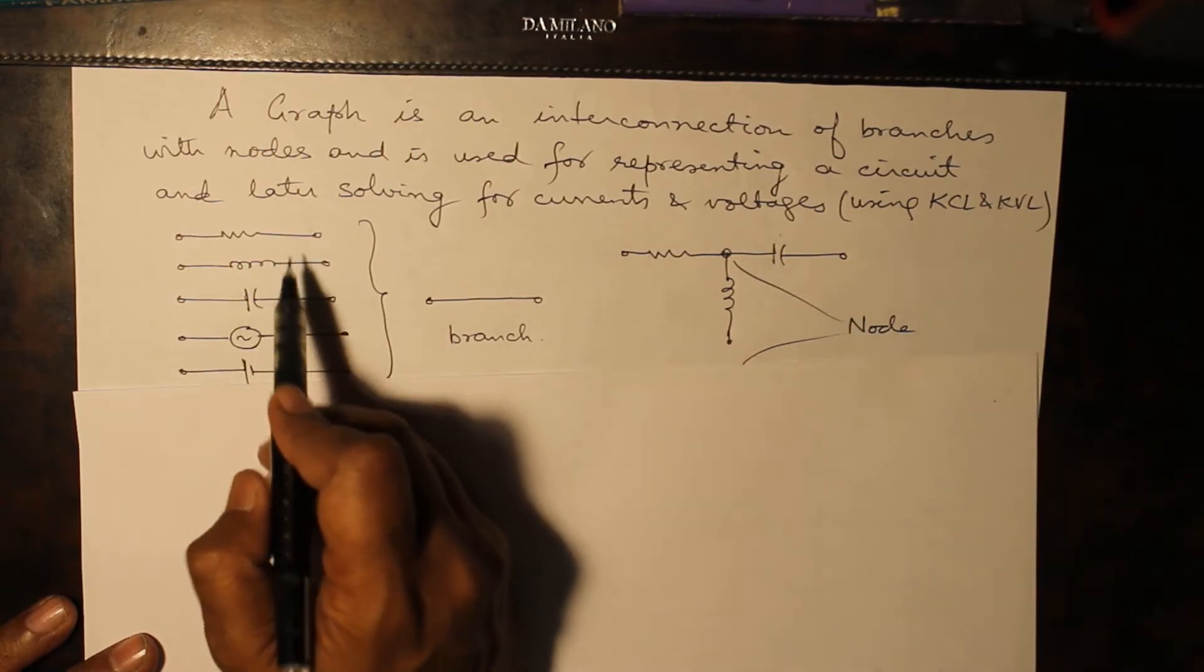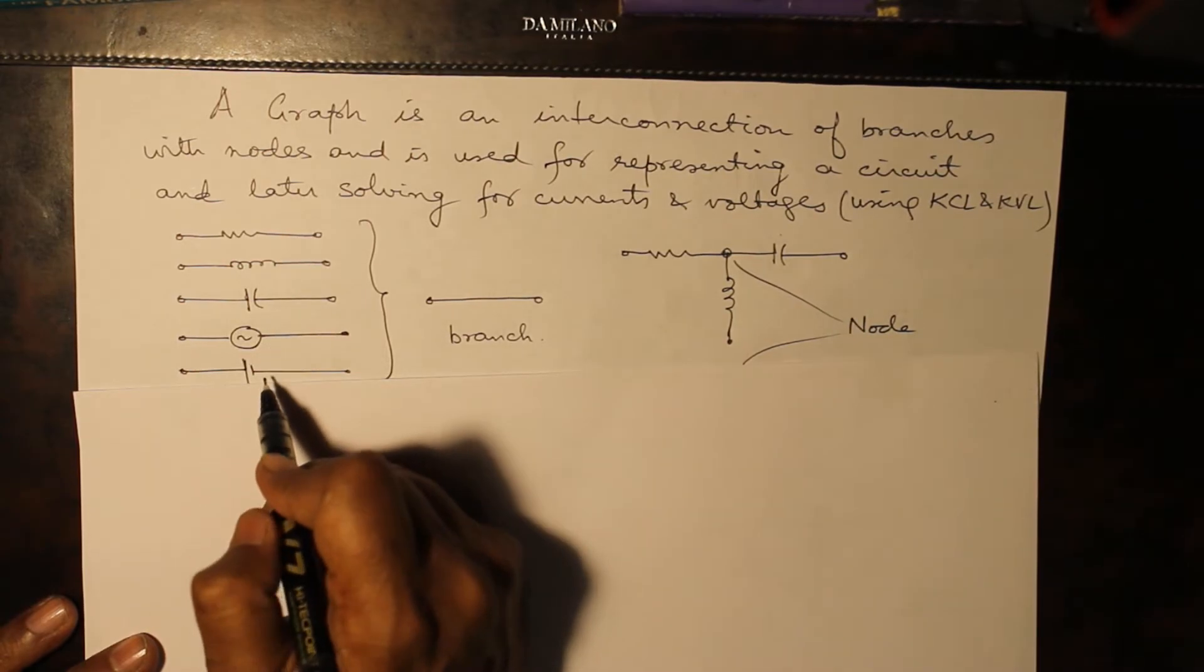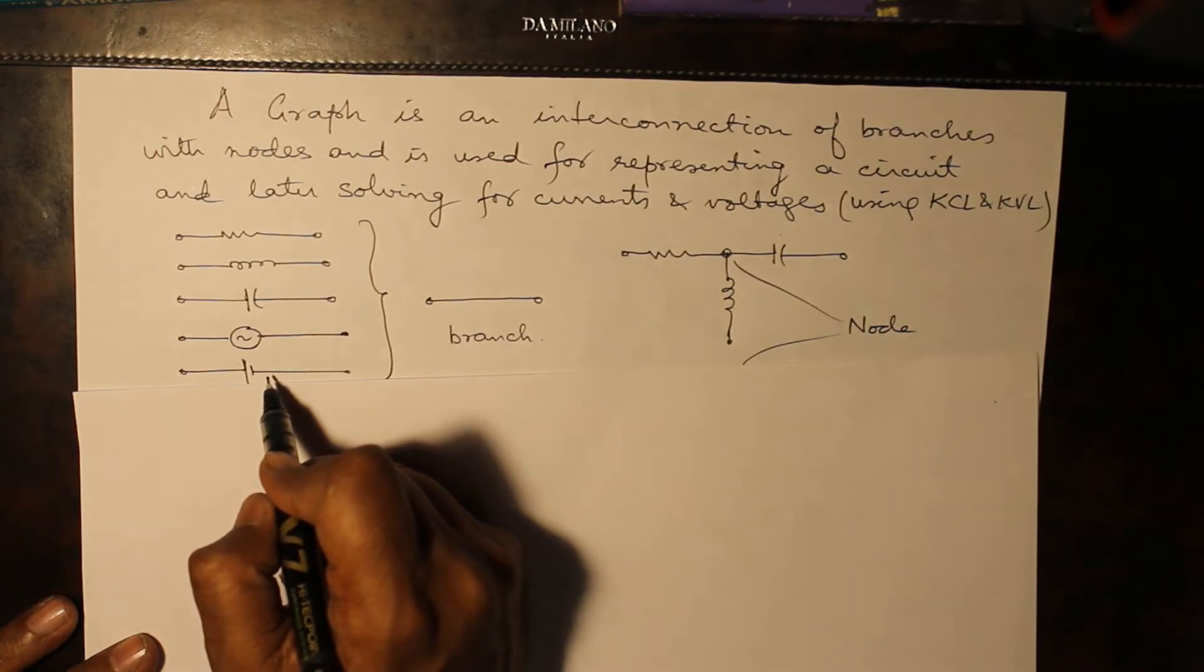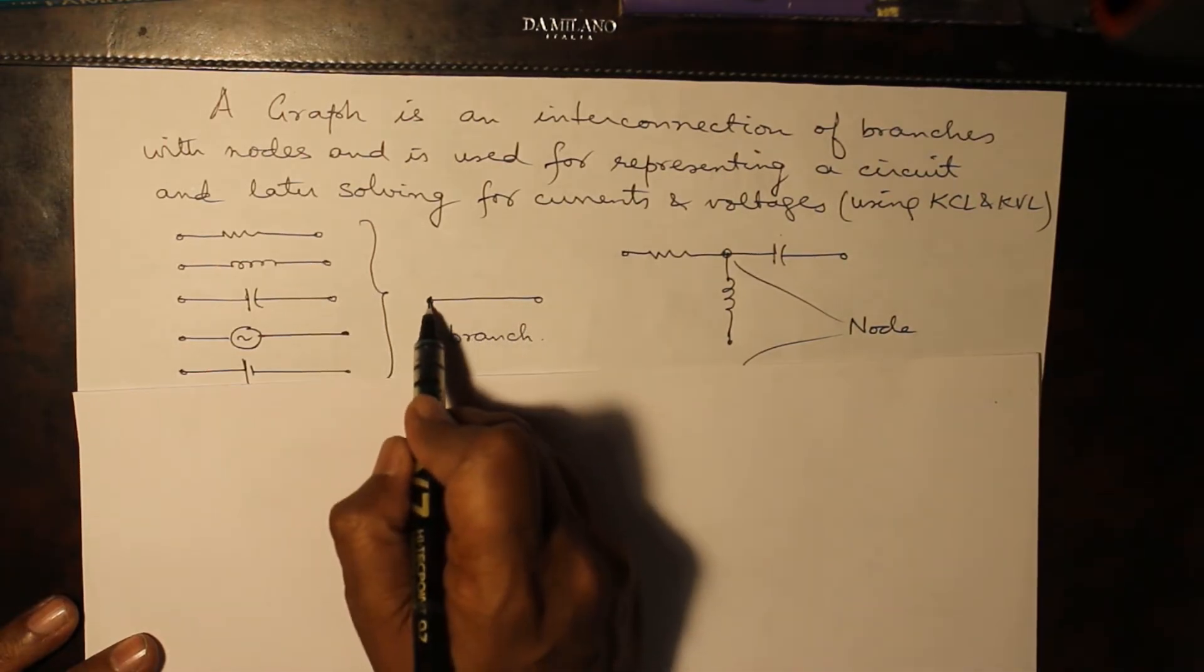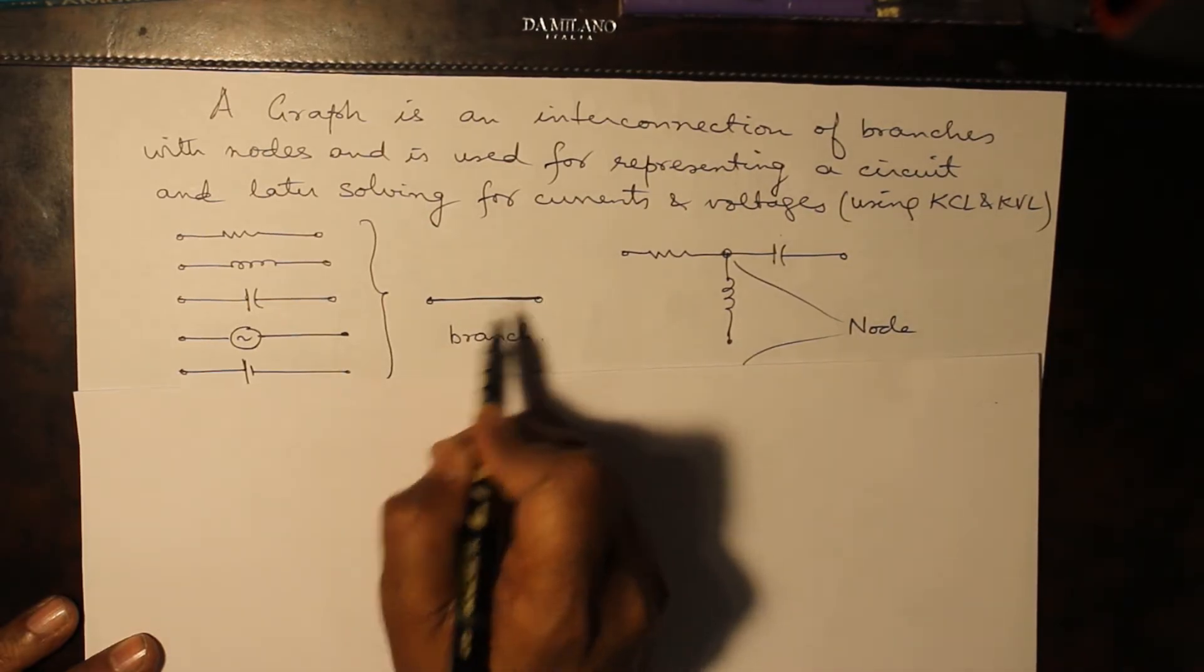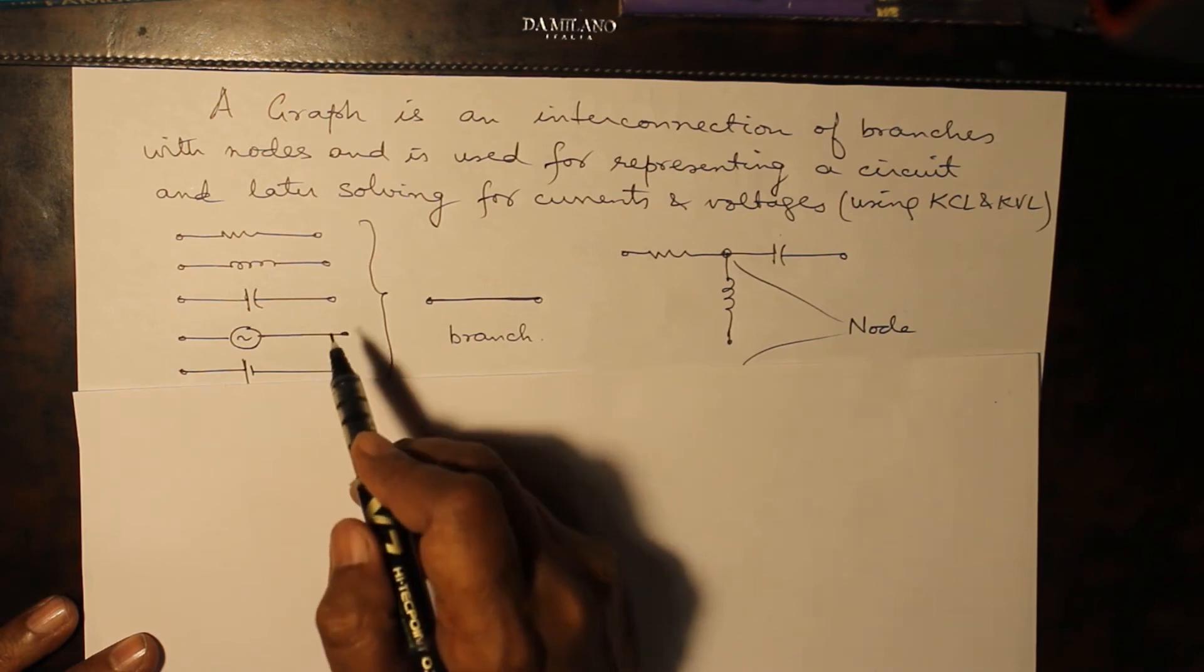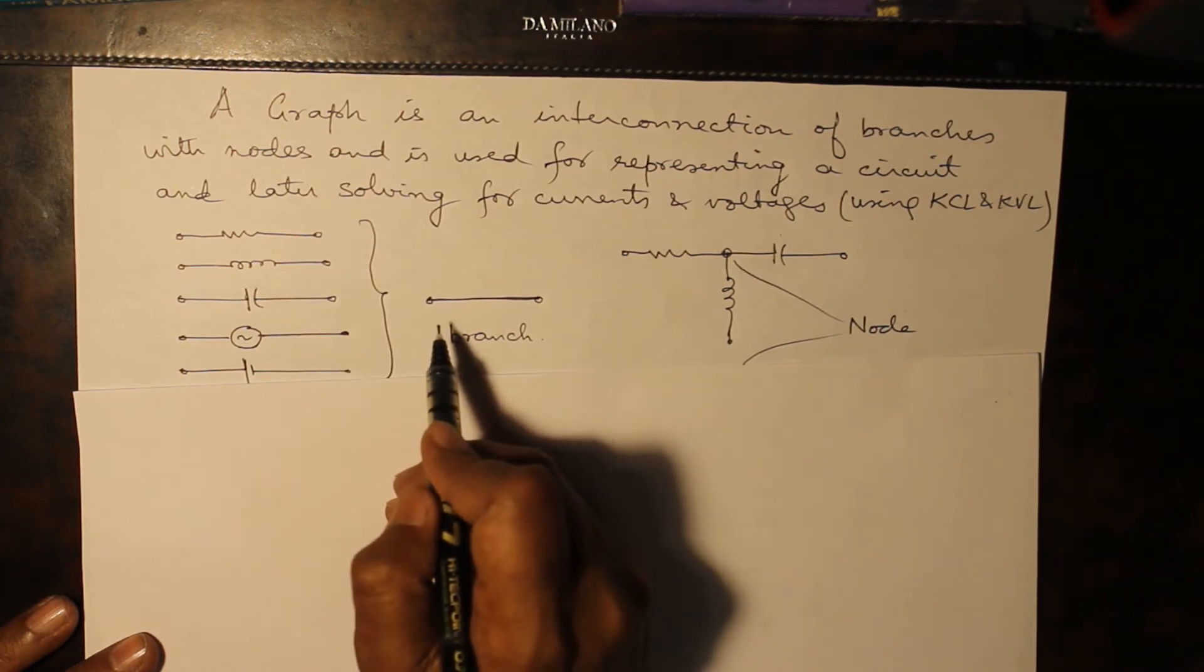First of all, resistance, inductance, capacitance, AC voltage source and DC voltage source - all of them are treated as a branch. But remember one thing, a current source is not there because a current source is not considered as a branch.